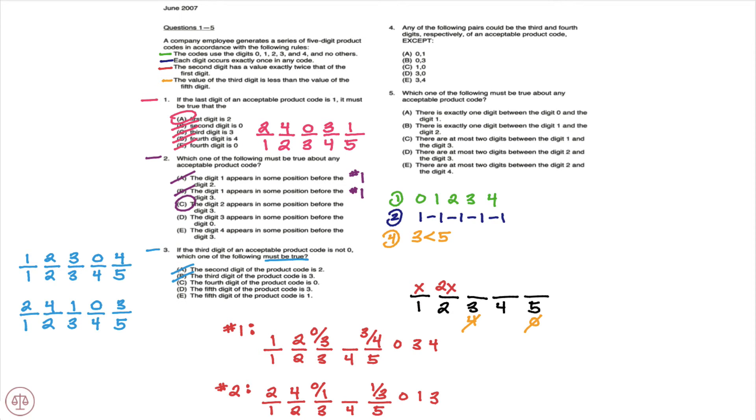C, the fourth digit of the product code is zero. And you notice in both of our scenarios here zero is the fourth digit, so C must be true and C would be the correct answer.